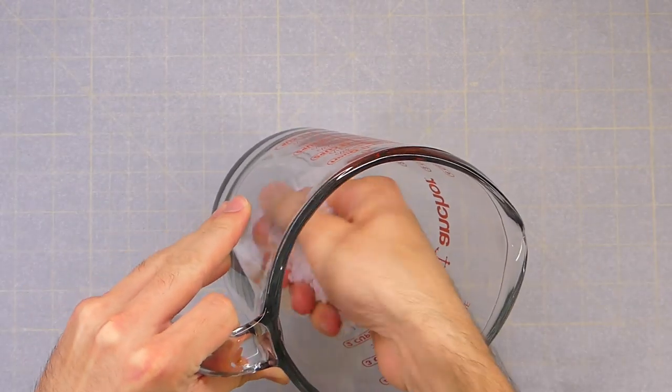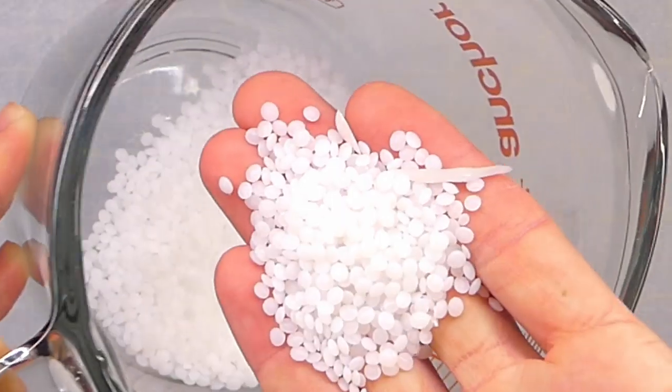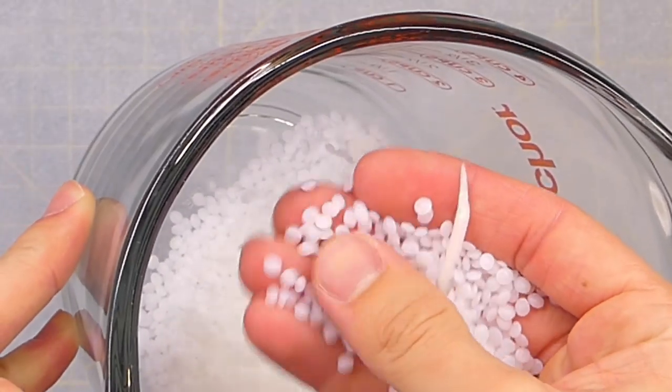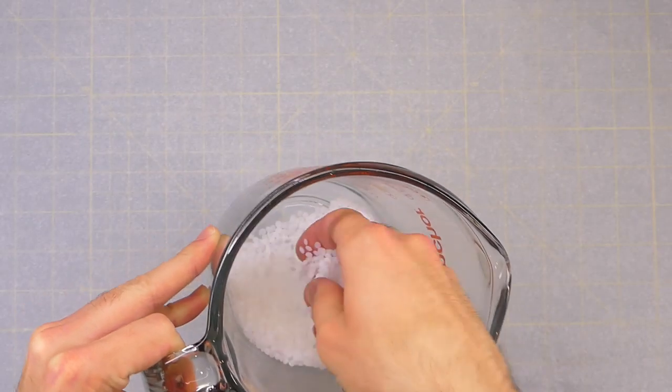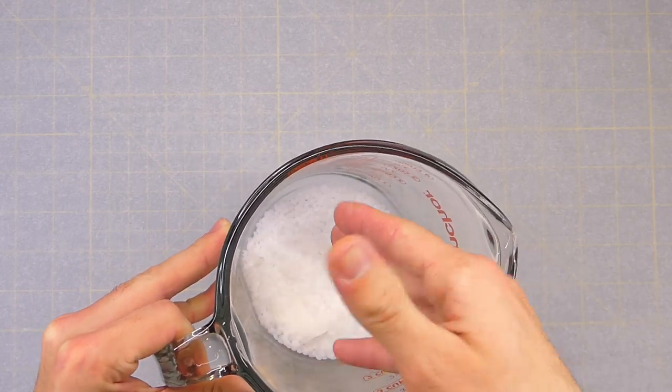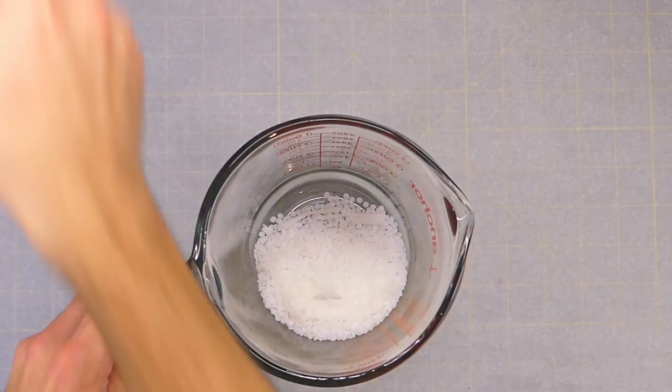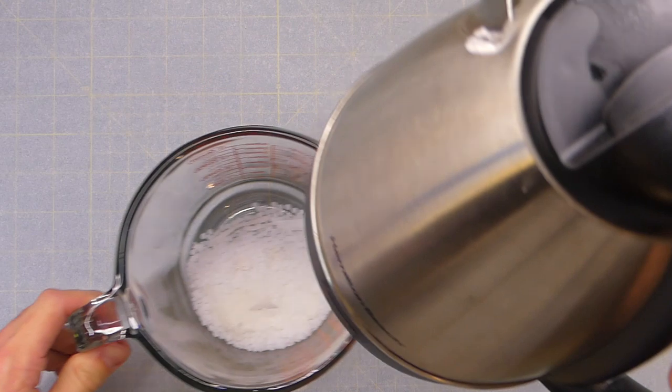The cool thing about InstaMorph, in case you don't know what this is, it comes in these little plastic pellets because this is a thermoplastic. When you add hot water they melt all together and turn into one chunk basically.